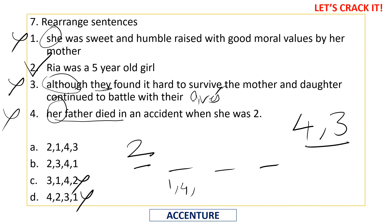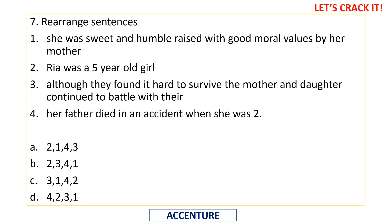Sentences four and three must come together. So the correct order is two, one, four, three. Ria was introduced first, then her qualities are described, then her father's death, and finally that even though he died they never gave up. Option A is the correct answer.